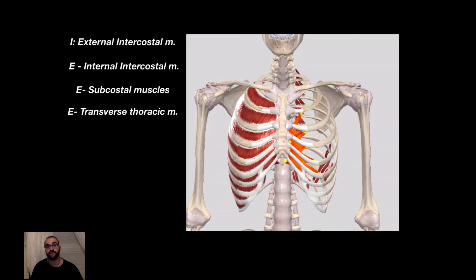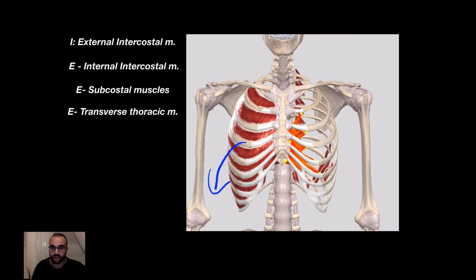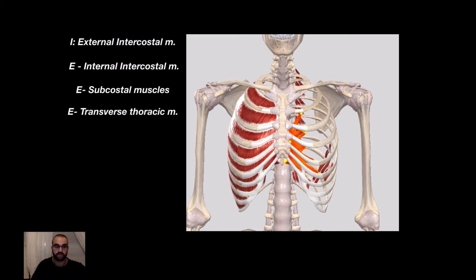The next muscle group is the Transverse Thoracic Muscle. These are found on the inside of the chest — you can see the breast bone here, and the ribs. They are marked 'E' for Expiration, pulling the chest downwards. They originate on the Corpus Sterni — the body of the sternum — and also the Xiphoid process, then insert up on the ribs. When they contract, they go downwards and support Expiration.